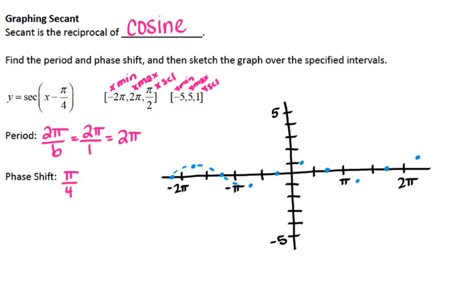Here's what our cosine graph would look like — which it's not cosine, but it's going to help us graph the secant. Secant is the reciprocal of cosine, so I'm going to take all of those values and turn them upside down. Particularly at the values where cosine is 0 — when you take 0 and flip it over, it becomes undefined. That's why some values of secant are undefined, and undefined values become vertical asymptotes.